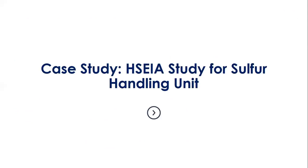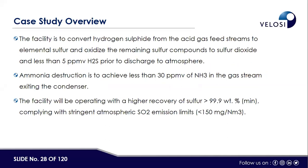We have now explained what HSEIA is, the project phases, objectives, benefits, and the regulations and standards. We are now going to start with the case study, in which we carried out an HSEIA study for a sulfur handling unit. Due to confidentiality, we have removed the plant name and location. The purpose of this facility is to convert hydrogen sulfide from acid gas into elemental sulfur and oxidize the remaining sulfur compounds to sulfur dioxide, minimizing their amount prior to discharge to the atmosphere.